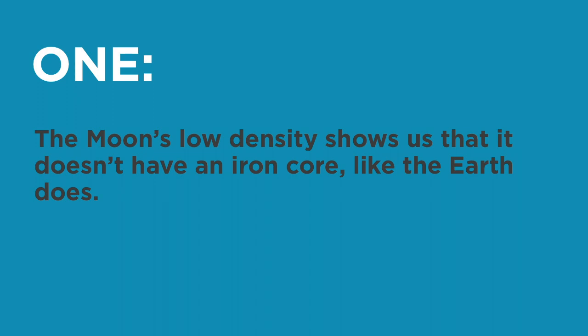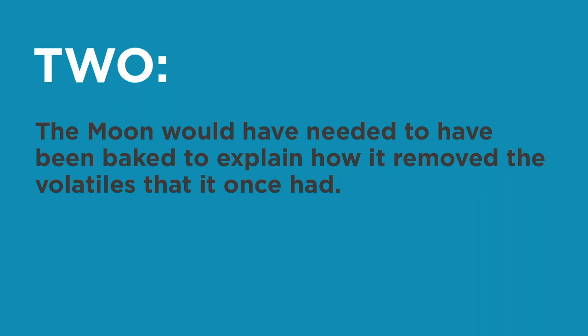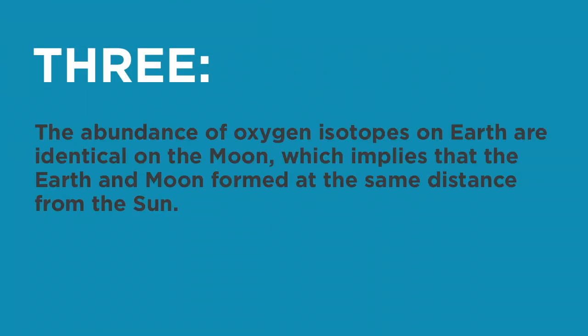First, the Moon's low density shows us that it doesn't have an iron core like the Earth does. Second, a volatile is a substance that can evaporate at normal temperatures — water, for example. Moon rocks contain very few volatile substances, which means the Moon would have needed to have been baked to explain how it removed the volatiles it once had, because to remove volatiles you need to heat it up. And it would have only been the Moon that was baked, because if the Earth was baked as well, it would have removed its volatiles too, and no life would have formed. Third, the abundance of oxygen isotopes on Earth are identical on the Moon, which implies that the Earth and the Moon formed at the same distance from the Sun.